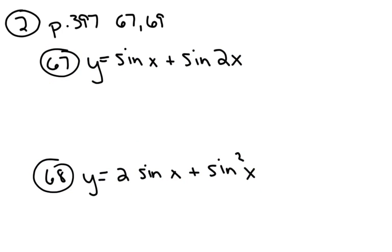For problem 2, page 397, number 67 and 69, they want you to graph these trig functions and find the maximum and minimum value. I'm actually going to change this a little bit. I'm going to make this the range from 0 to 2 pi, so that we're not looking at the entire graph. So when you go put the trig graphs in your calculator, make sure you are in radian mode.